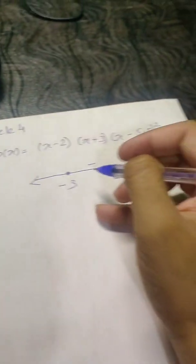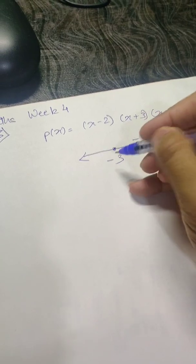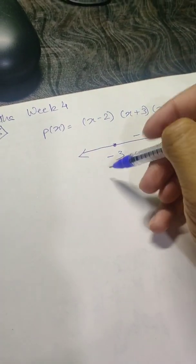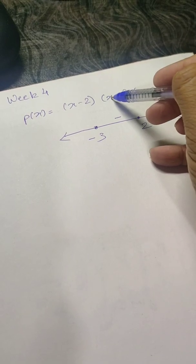So we get this. Now for values less than minus 3, let's say minus 5. This will be negative, this will be negative, and this will be positive always because it's square. So negative times negative will be positive.